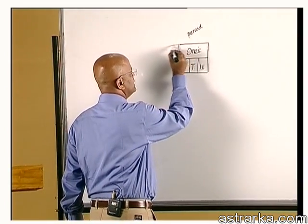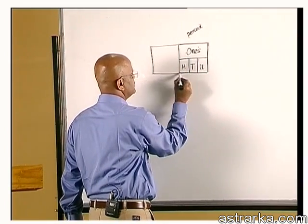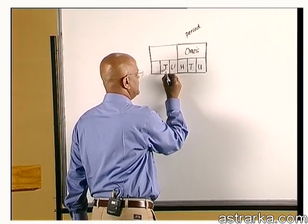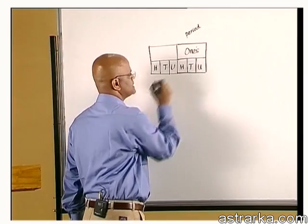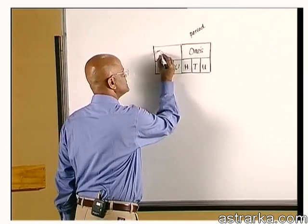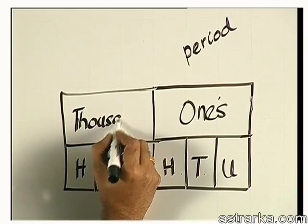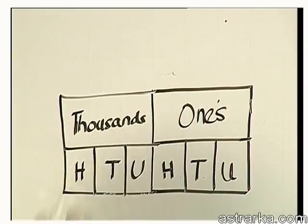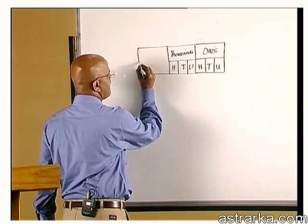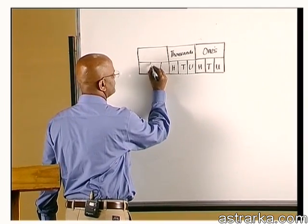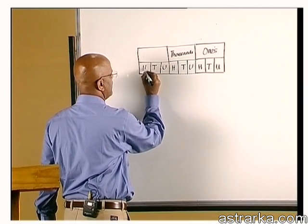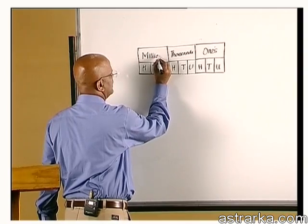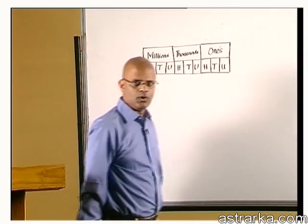So, if you had the next period next to it, you'll have units, tens and hundreds as before, but this is the thousands period. The period to the left, unit, tens and hundreds is called the millions period and so on.